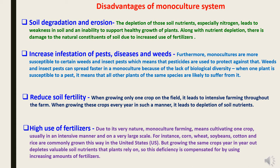Disadvantages of the Monoculture System: First is soil degradation and erosion. Depletion of soil nutrients, especially nitrogen, leads to weakness in soil and inability to support healthy plant growth. Damage to natural soil constituents due to increased fertilizer use leads to soil degradation and erosion. Second is increased infestation of pests, diseases, and weeds. Monocultures are more susceptible to certain weeds and insect pests, requiring pesticides for protection. Weeds and pests spread faster in monoculture due to lack of biological diversity — when one plant is susceptible to a pest, all other plants of the same species are likely to suffer. Furthermore, repeated pesticide use leads to resistance development in insects and weeds.